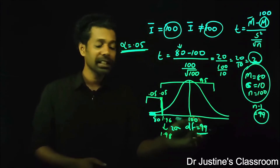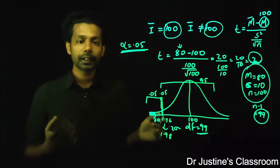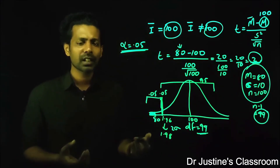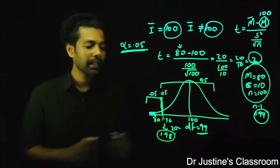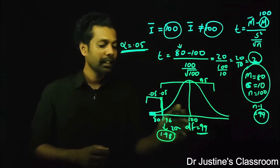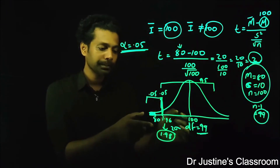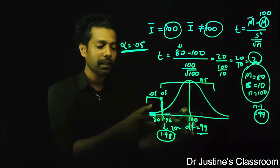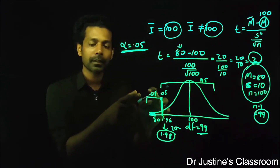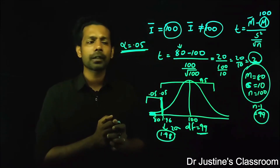Originally it has to be 1.98 when you take 99 as the degree of freedom, but when the sample size is bigger — approaching infinity — this value tends to be 1.96. We generally work with 1.96 itself. To be very precise, when you use a table you may get a value of 1.98 for a degree of freedom of 99. If our value of 80 is 1.96 standard deviations away from 100, that means the chance of that occurring is 0.05 — a 5% chance, which is a rare chance.